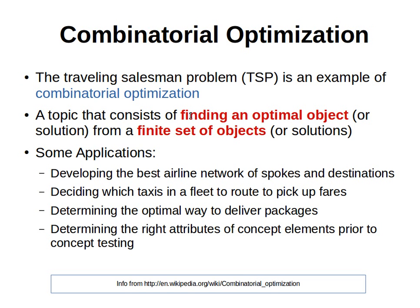This is just a brief introduction to combinatorial optimization — finding an optimal solution from a finite set of solutions. This actually has several real-world applications, so if we solve this problem efficiently and in a feasible time, we can become superstars — for example, developing the best airline network, and so on. The information on this slide is from Wikipedia. Let's stop here and continue in the next video. Thank you.